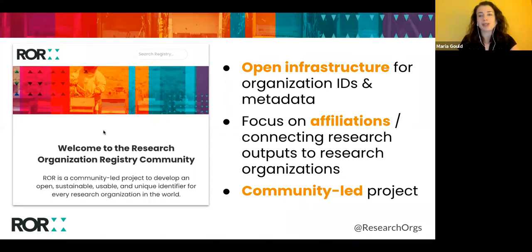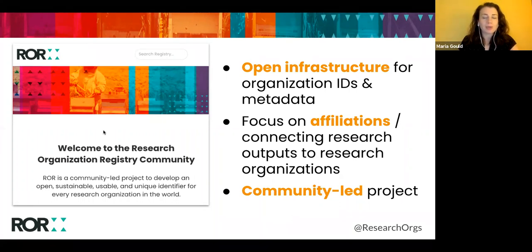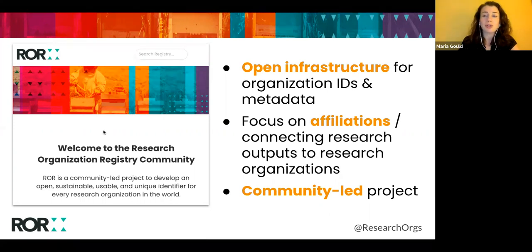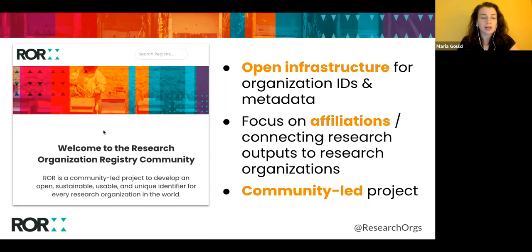First, ROR is infrastructure. It is an open registry of persistent identifiers and metadata for research organizations. Second, ROR is focused on research organization affiliations — a really key piece of metadata that can be used to connect research outputs to institutions. This is a really important distinction because it means that ROR has a different focus and scope than trying to encompass every single department at every single institution, or focusing on identifying every single legal entity in the world. And lastly, one thing that sets ROR apart is that it's a community-led project.